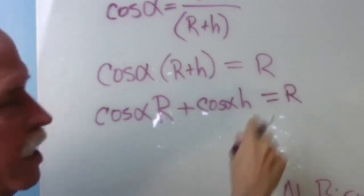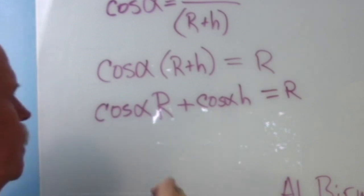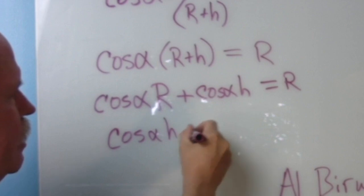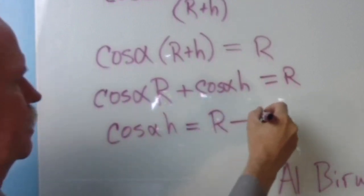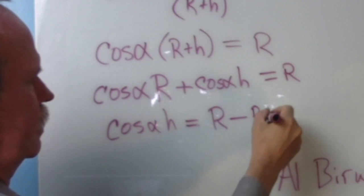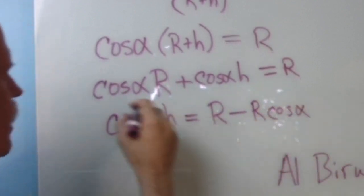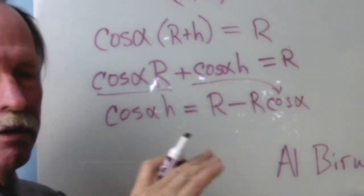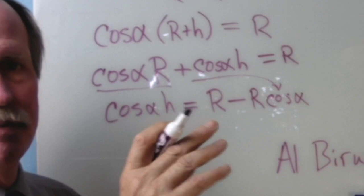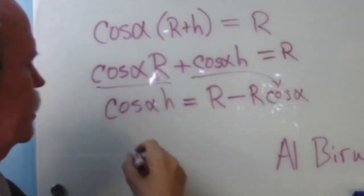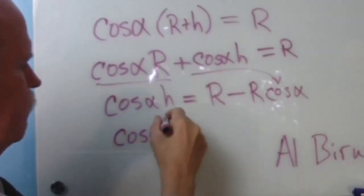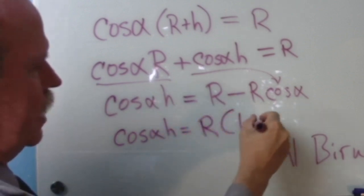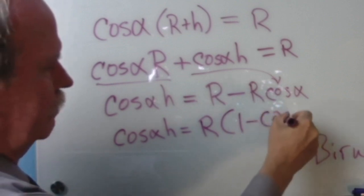This one is actually a little bit simpler to solve than our last one was. Remember, we want all the r terms on one side. So what we're going to do is say cosine alpha h equals r minus r times the cosine of alpha. Basically, we brought that term down to here. As you recall from our last episode, we can factor this. So let's go ahead and do that again. Cosine alpha h equals r times one minus cosine alpha.